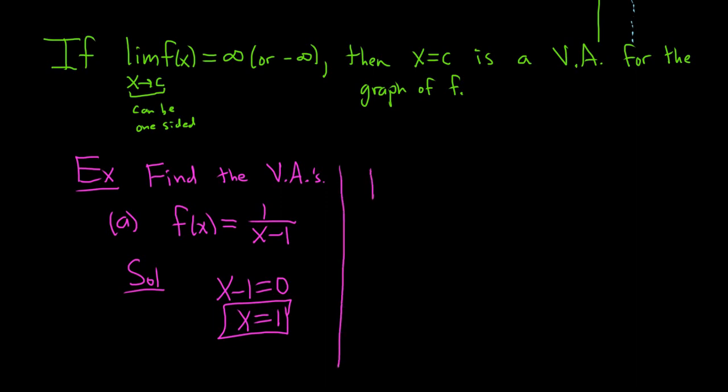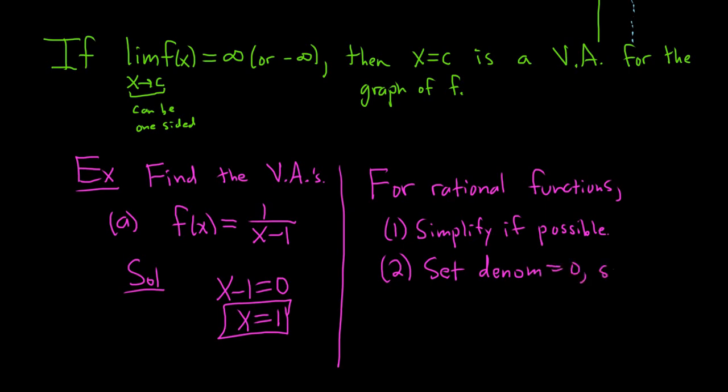Let me write those steps down. For rational functions, which is what we have—that's a polynomial over a polynomial—step one: simplify if possible. In this case it was not possible to simplify. If anything does cancel it will give you a hole. Step two: set the denominator equal to zero, solve, done. No calculus involved.